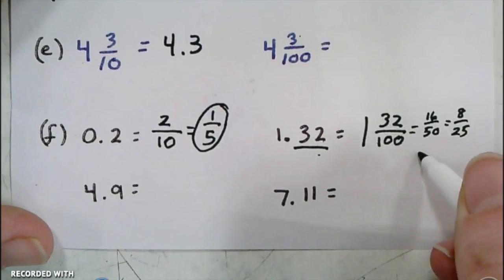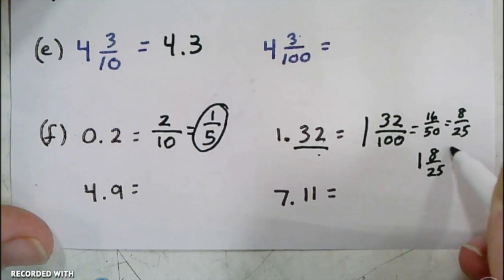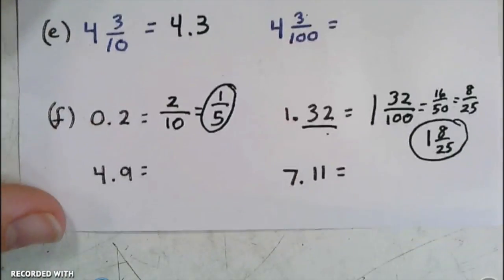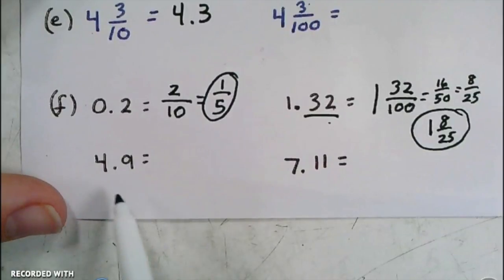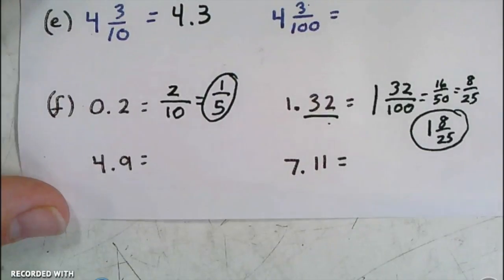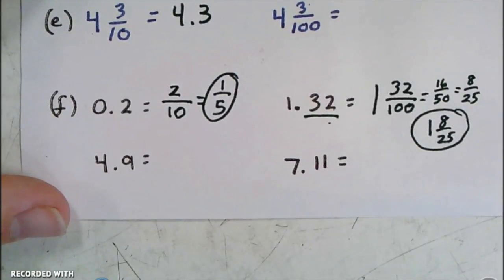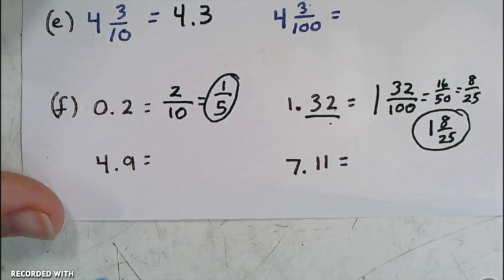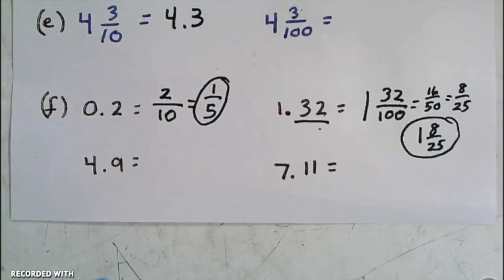So my final answer would be 1 and 8/25. Go ahead and try these last two on your own. Make them into fractions, or you can reduce them into their simplest forms. The numbers will actually already be in their simplest forms, so you don't have any extra work to do there, but go ahead and get to work.